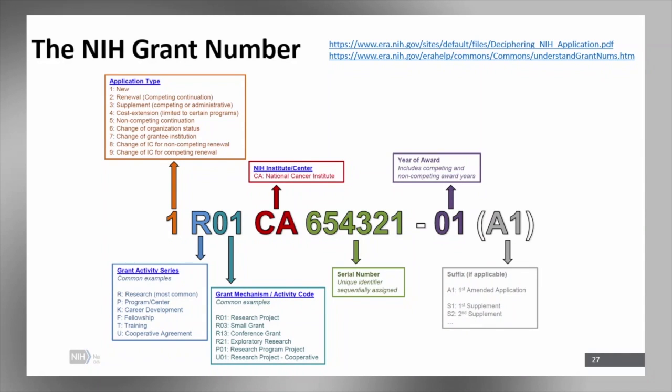The next two digits is the IC code. You saw the cheat sheet there, CA for NCI. Some of them are not as intuitive. HD, one may think that's health disparities. It's the HD is human development and child health. So HD is the code for child health and human development. So that's where I find the cheat sheet handy when I'm not quite sure what those two letters could stand for.